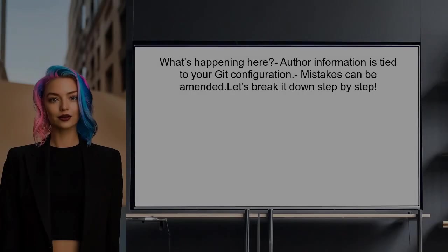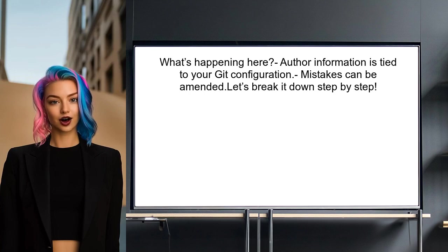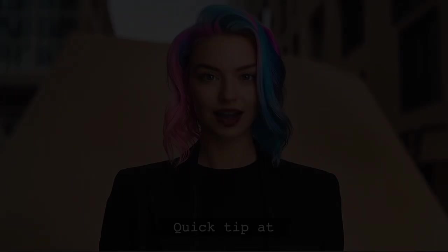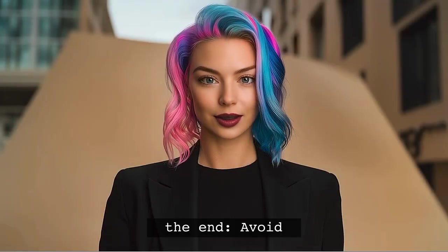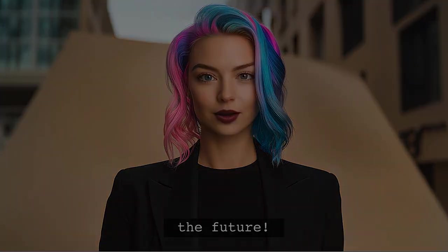So what's happening here? When you commit changes in Git, the author information is tied to your Git configuration. If you've made a mistake, it's possible to amend that information. Let's break it down step by step. I'll also share a quick tip at the end that will help you avoid this issue in the future.